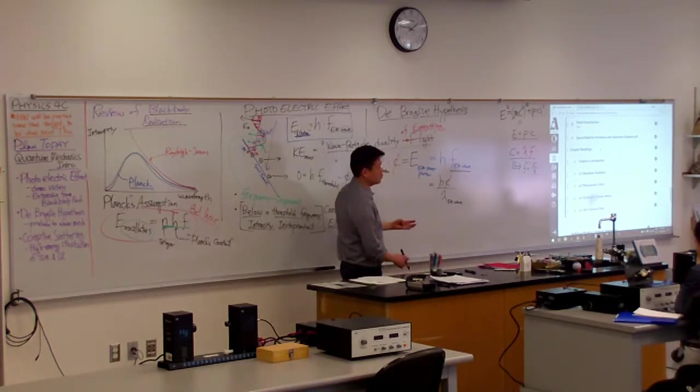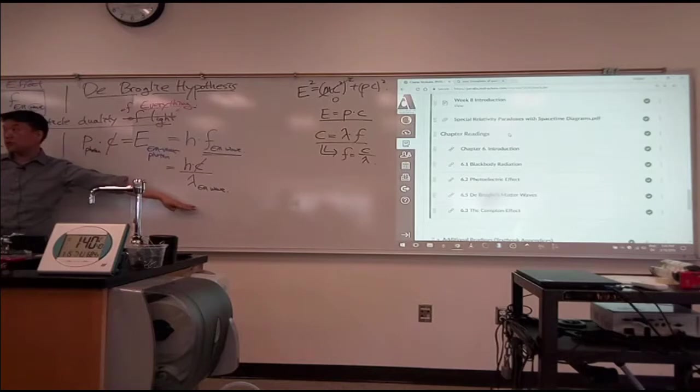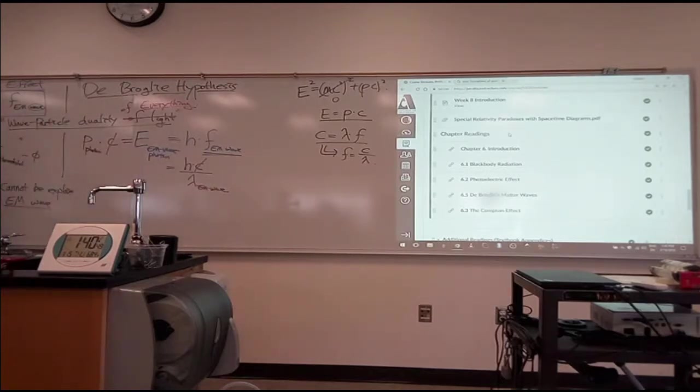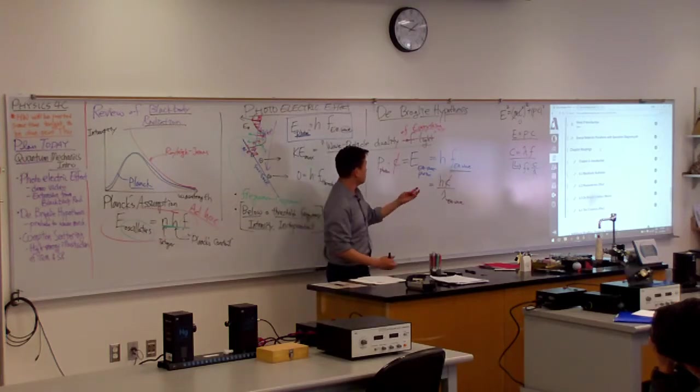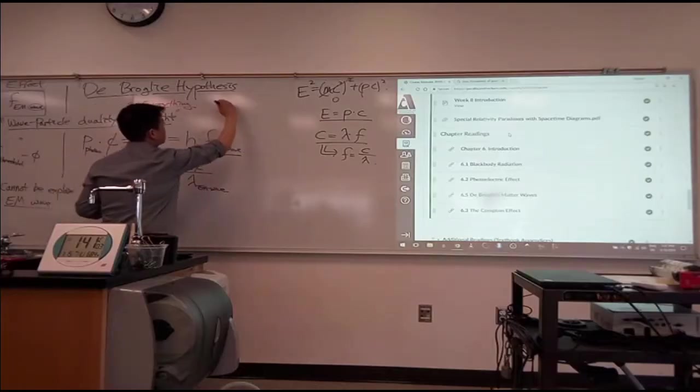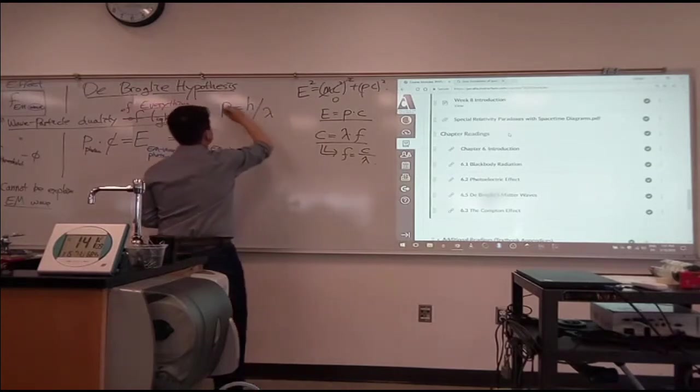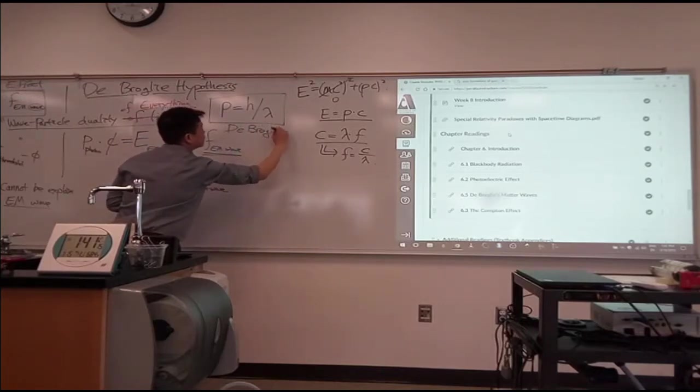So this is where De Broglie makes the bold jump. So far he hasn't introduced anything new. What he would now introduce is that he would say, well, we don't need this. That this is a universal expression. That this relationship applies to everything. It applies to light, obviously. And it applies to this ball. So let me just copy it over. He would say momentum is equal to H over the wavelength. This is what we are going to call De Broglie relationship.